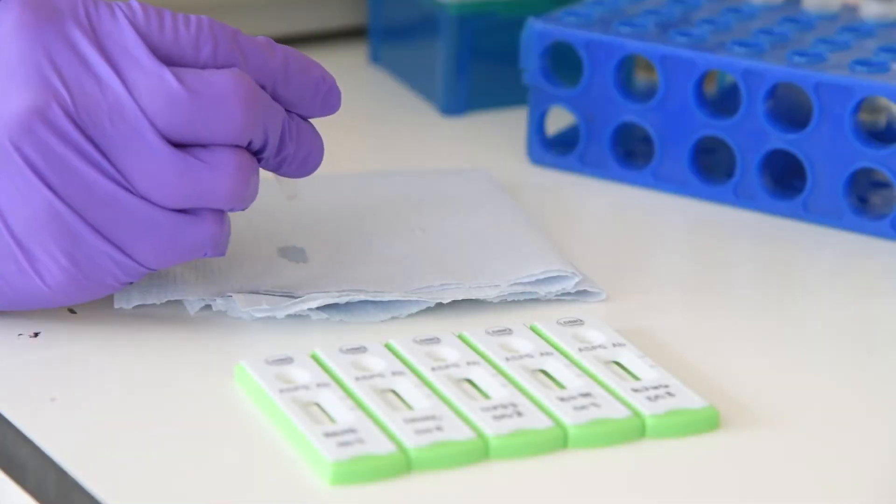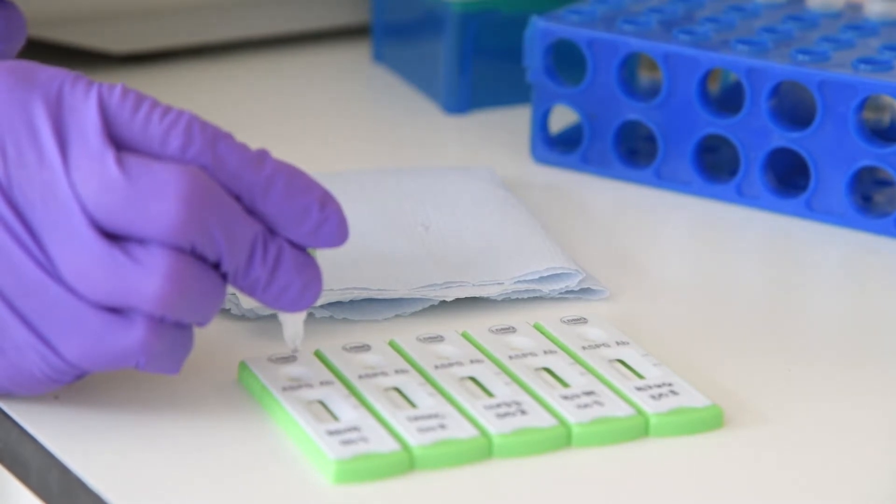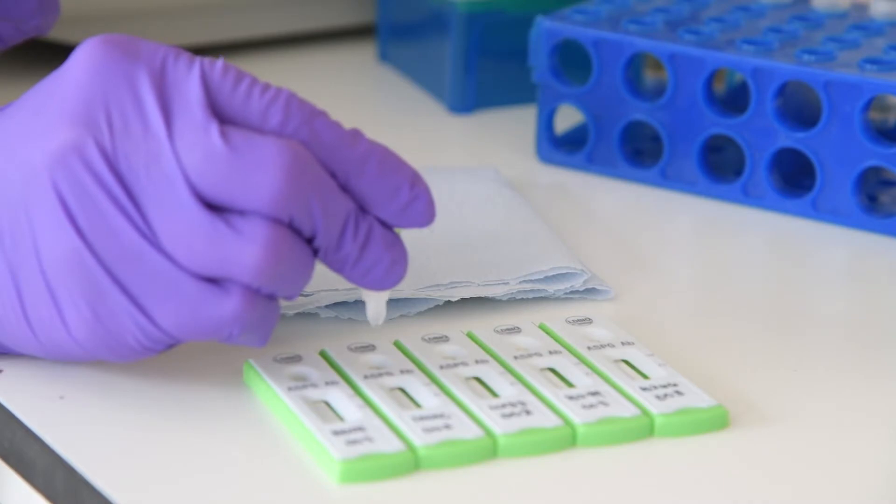Dispense one drop of eluent onto a paper towel to remove any air bubbles, and then dispense four drops of the eluent into each sample well. Keep the dropper vertical while dispensing.